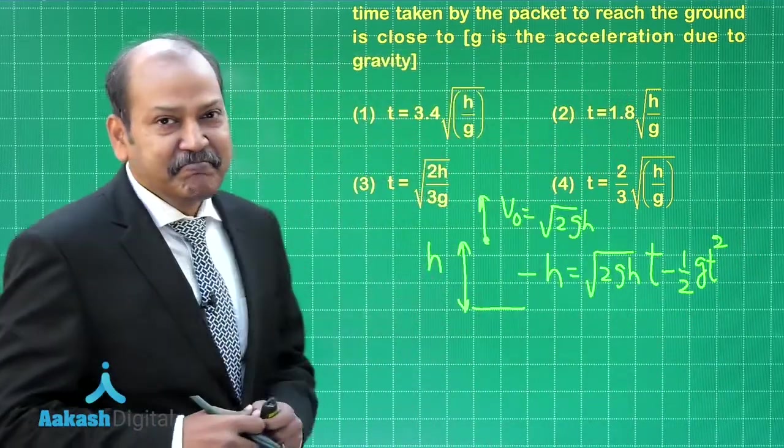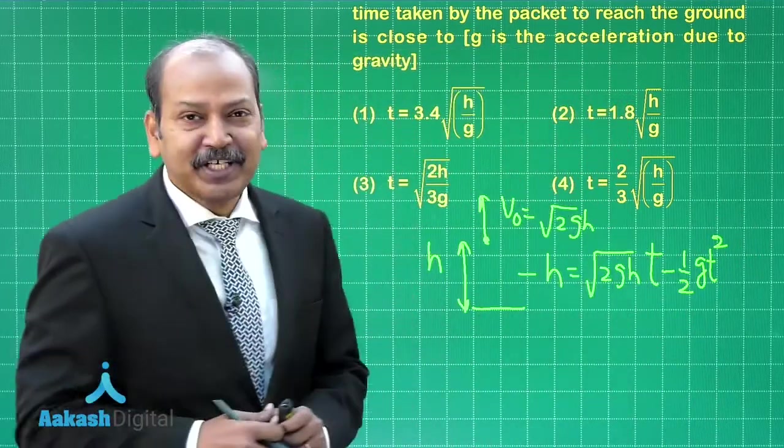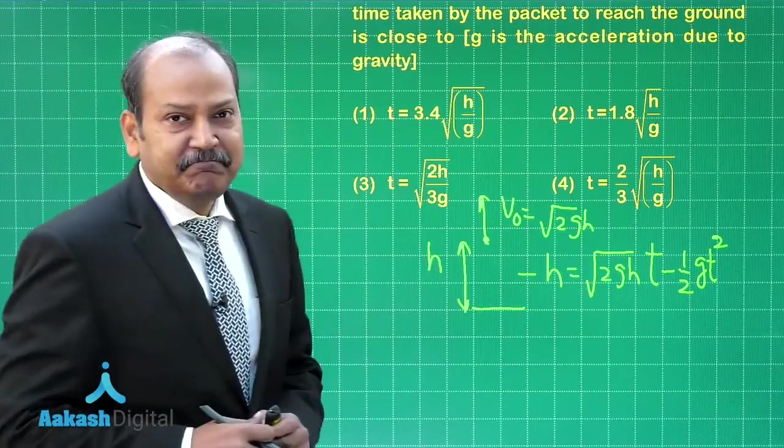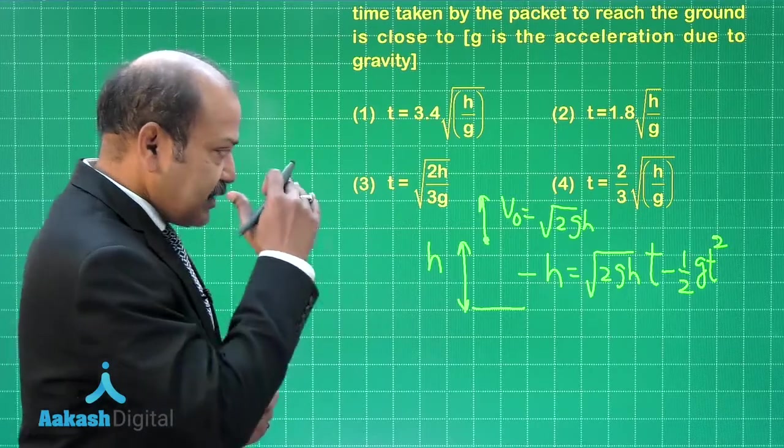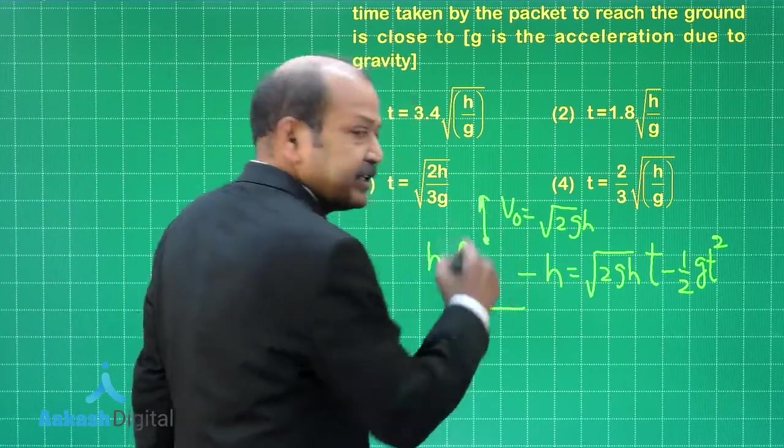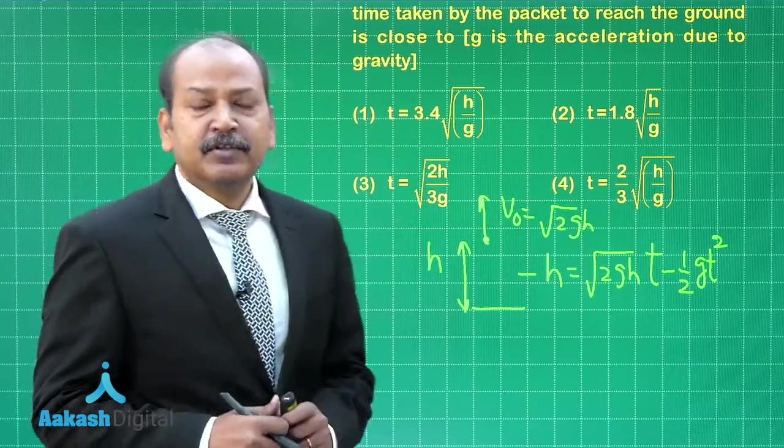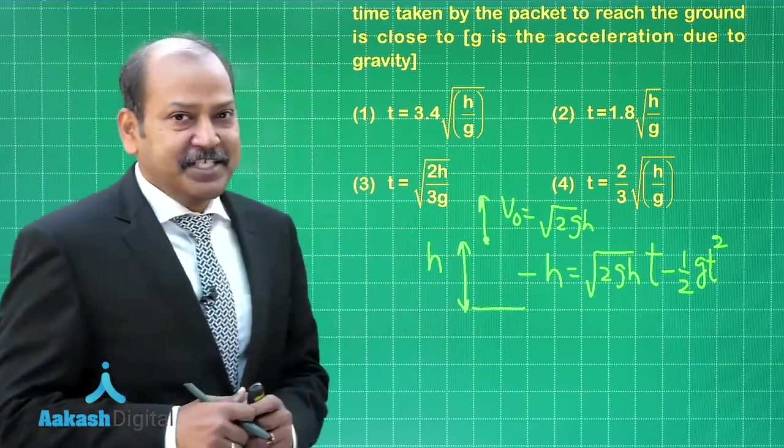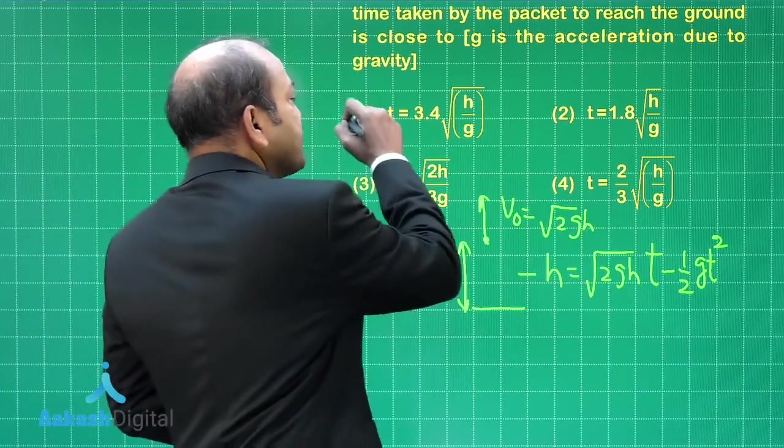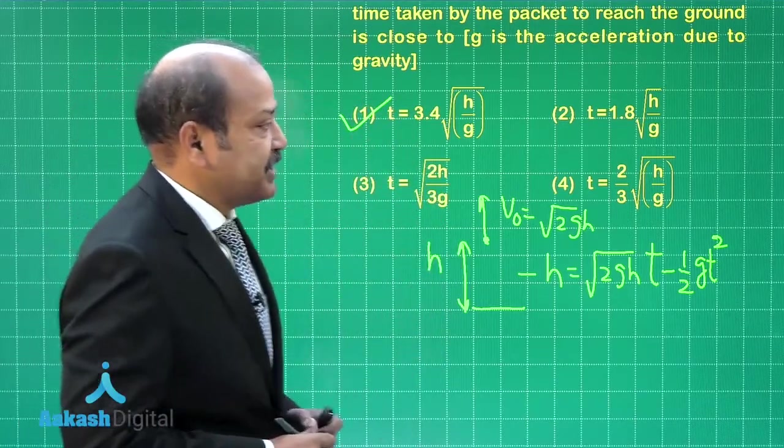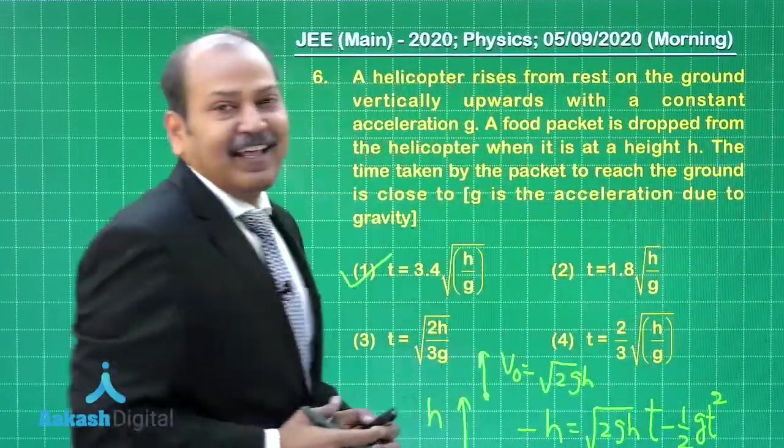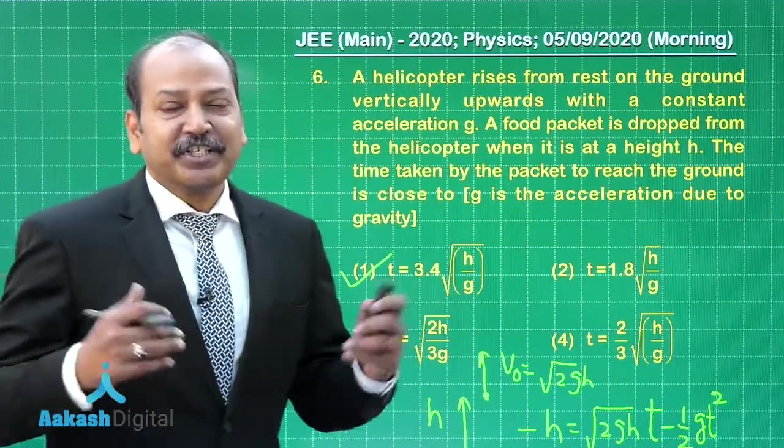We have a quadratic equation. We need to solve this quadratic equation, and once we solve it we find that the value of t, the time it will take to go up and come back and hit the ground, is coming out as 3.4 root h by g. And that means for this particular question, option one is the correct option. Let us slide it back and now go to question number 7.